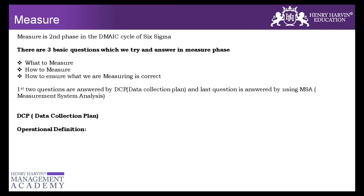Right now, we haven't identified any causes for our problem — we were in the Define phase and have now entered the Measure phase. For example, if you are doing a project on improving cycle time, your project sponsor and champion have given you a go-ahead. Now in the Measure phase, you are preparing a data collection plan so that everyone knows where the data is coming from and what it is about.